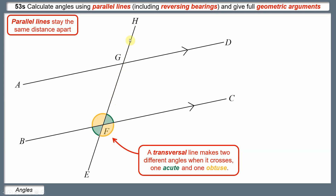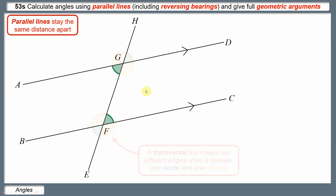If we carry this transversal line on across the other parallel line, AD goes in exactly the same direction as BC, so the angles that get made are exactly the same. This green angle here is the same size as this one, and this yellow angle here is the same size as this one. For our geometric arguments, we need to be able to give reasons why these angles are the same size.